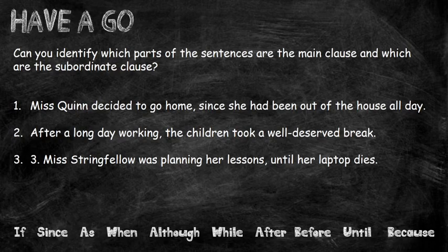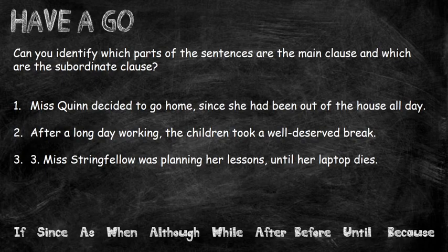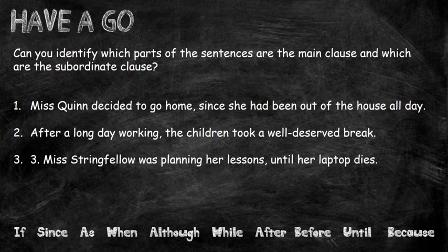Next part: what I would like you to do is identify which parts of the sentences are the main clause and which are the subordinate. Don't fall into the trap of thinking that the subordinate clause is always at the end of the sentence. The key thing is to identify where the subordinating conjunction is in each sentence — once you've found it, it will help you identify the subordinate clause. Pause the screen, have a go — maybe write out the sentences so you can underline them — and then we'll go through the answers together.